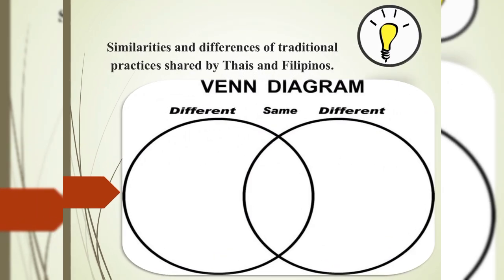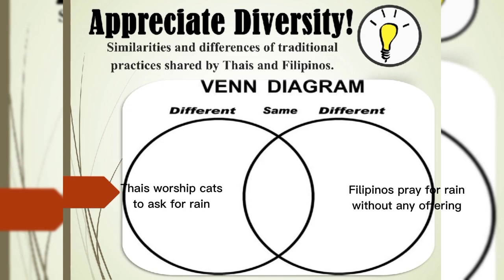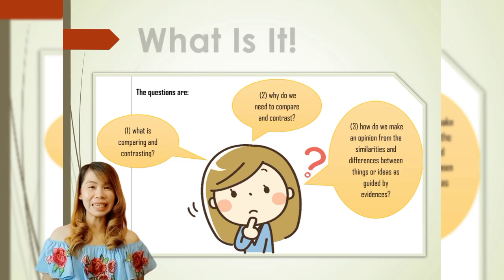Now, using Venn Diagram, let's appreciate diversity. The Venn Diagram below presents the similarities and differences of traditional practices between Thais and Filipinos. Thais worship cats to ask for rain while Filipinos pray for rain without any offering. Thais, in like manner with Filipinos, believe in the power of prayer.